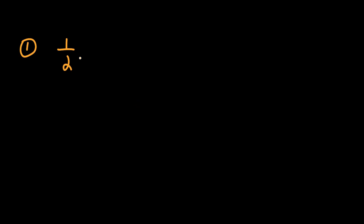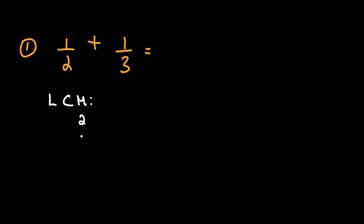Let's start with the first problem: one half plus one over three. You can use the least common multiple to solve this problem. So let's find the least common multiples of two and three.